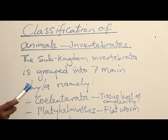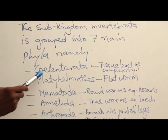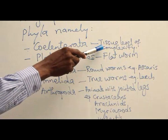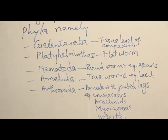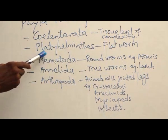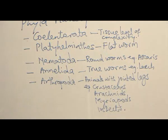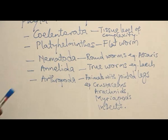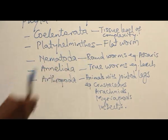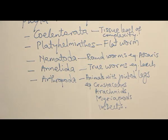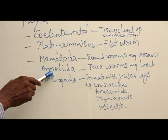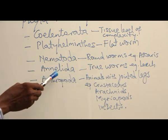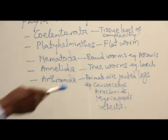The phylum Coelenterata, which has tissue level of complexity with only one opening — example: Hydra. Phylum Platyhelminthes is a group of flatworms like tapeworm, Planaria, and so on. Phylum Nematoda is a group of roundworms like Ascaris, Filaria, and so on. Phylum Annelida is regarded as the group of true worms.